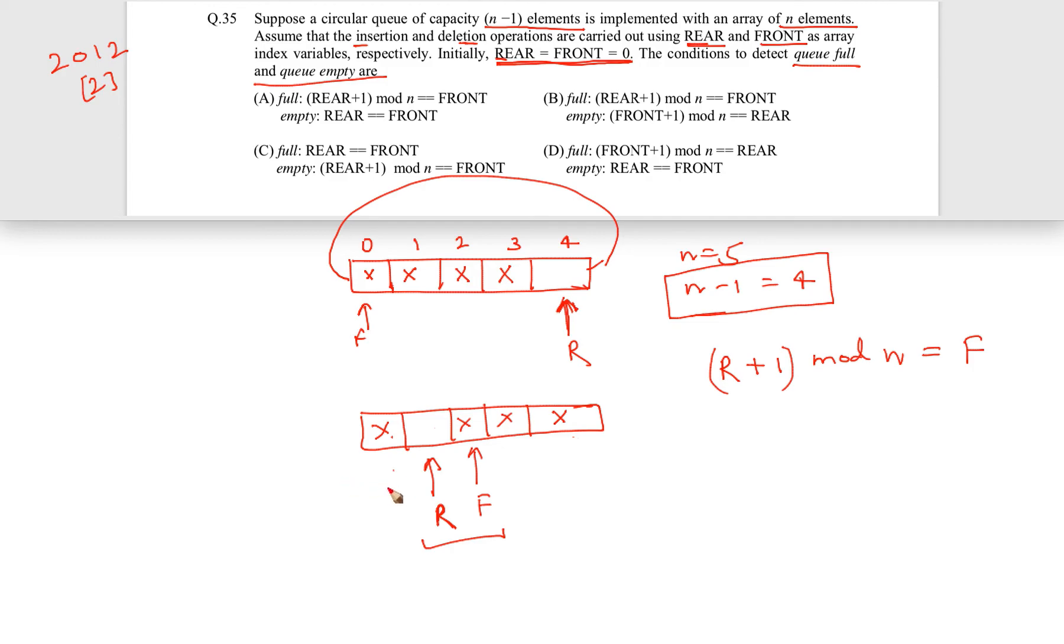That is why I took another example here because here also you can clearly see that what is happening. When you take r plus 1 then no need to take even mod, but mod will give you the same value and that is going to give the index where front pointer is there. This is the condition for full and that was the most tricky one because empty is pretty straightforward because that is the condition which is given initially: rear is equal to front is equal to 0 and that is why rear is equal to front. That is the condition for empty and for full we have discussed r plus 1 mod n.